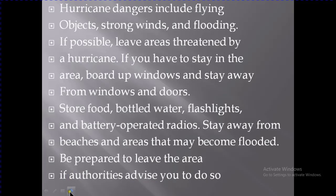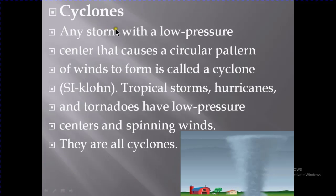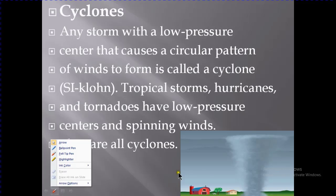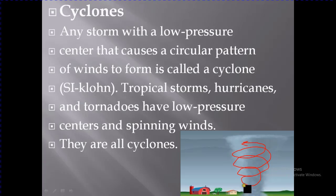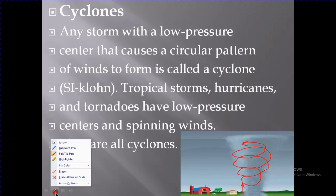Cyclone: any storm with a low-pressure center that causes a circular pattern of wind to form is called a cyclone. The air moves in a circular motion. You can see here it starts moving downward and then moves the air in a circular upward pattern — these are cyclones.